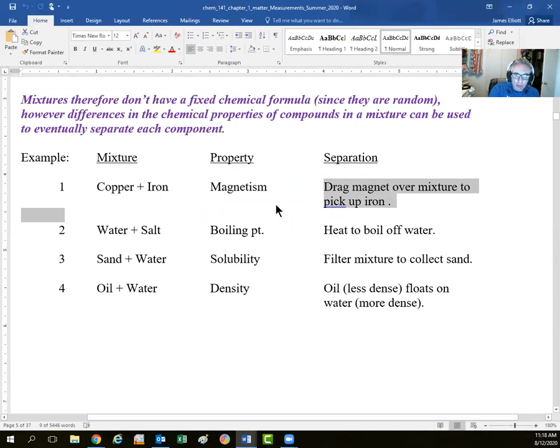Also, these mixtures can be separated using their different physical properties. You can't separate a pure compound, you can chemically change it by chemical reactions, but you can't use filtration or solubility to filter out one carbon dioxide molecule from another. But with mixtures, something like copper and iron, iron is magnetic, copper is not, so you could drag a magnet over the iron-copper mixture and it would pick up the iron and leave you with copper. Mixture of water and salt or saline solution, you could use the boiling temperature of water, 100 degrees Celsius, to boil off the water and leave you with a beaker of salt.